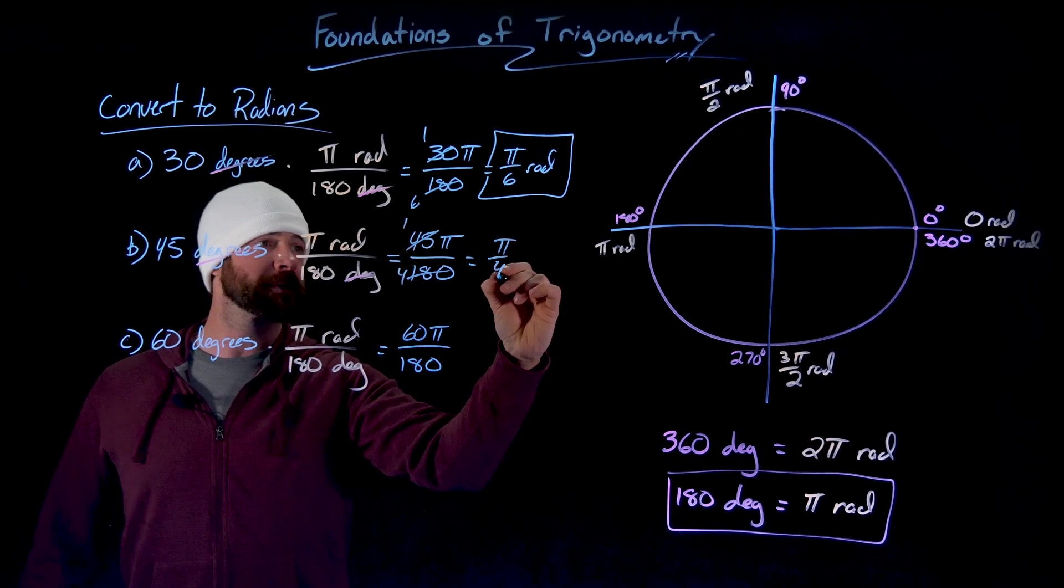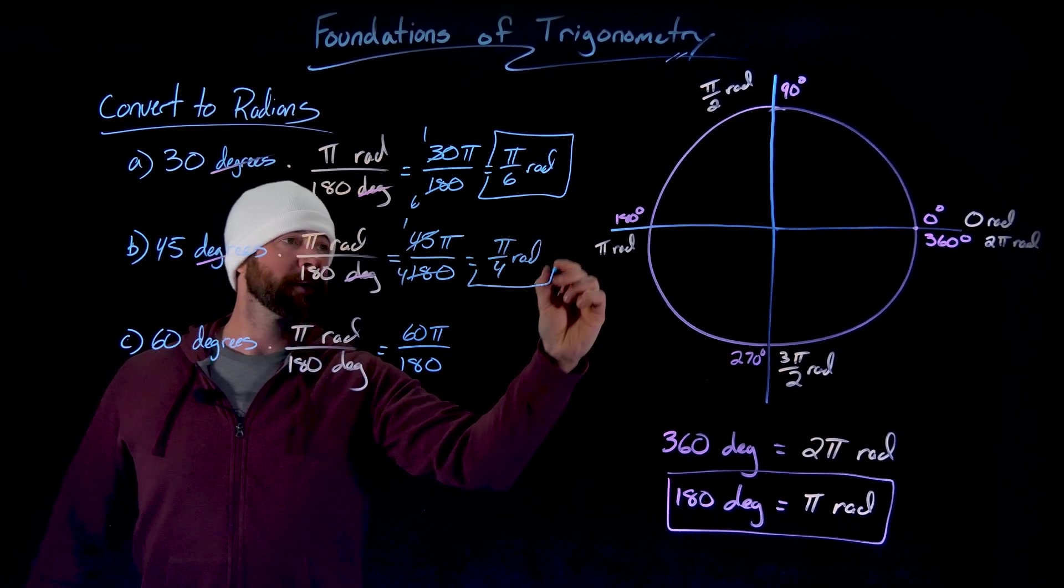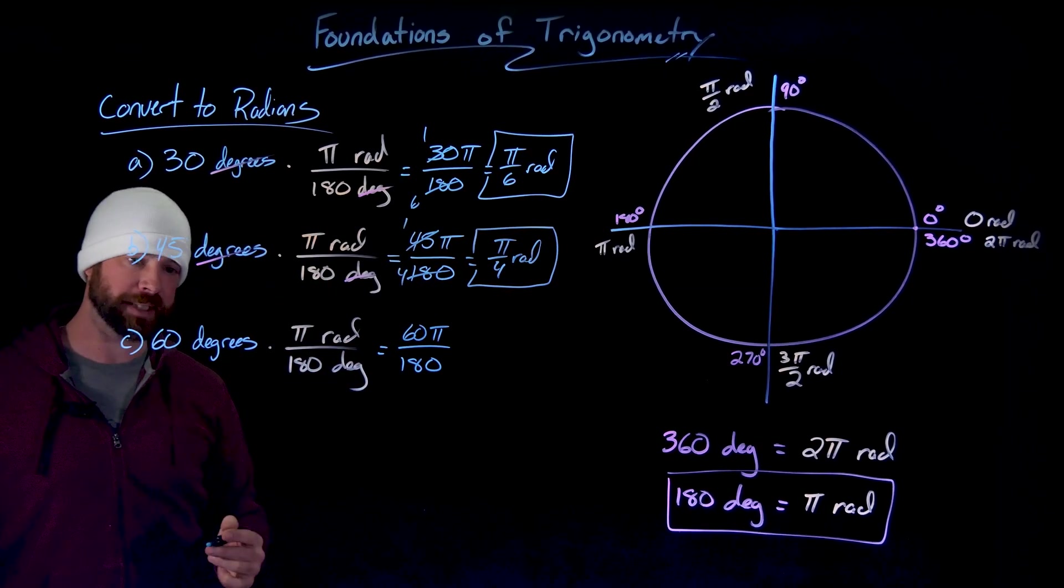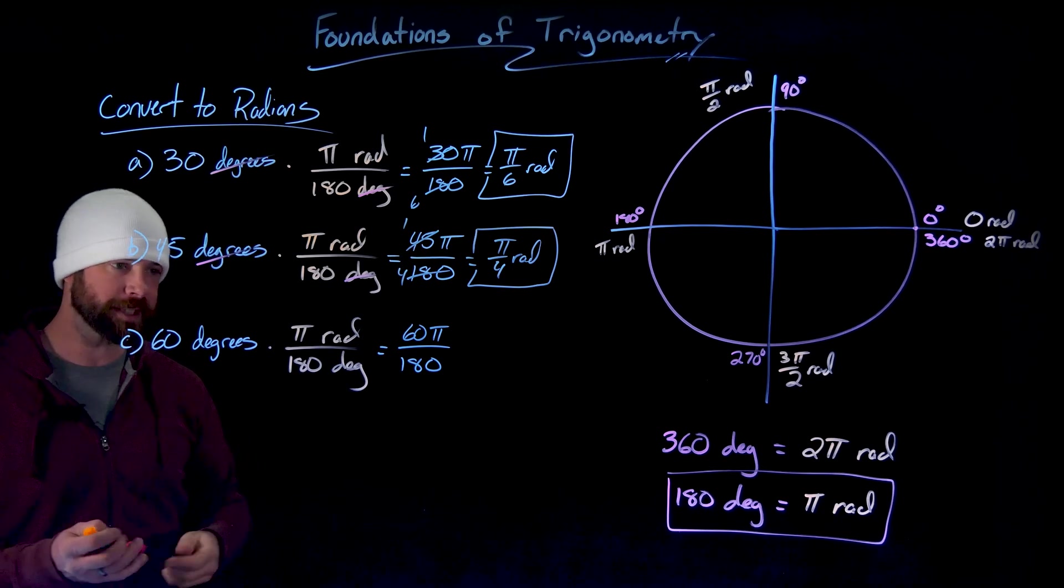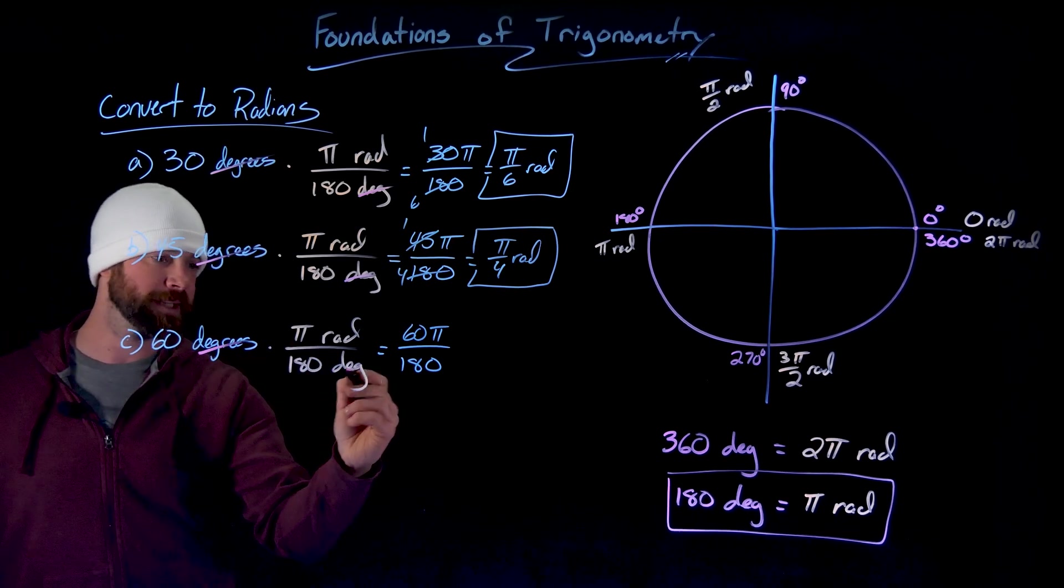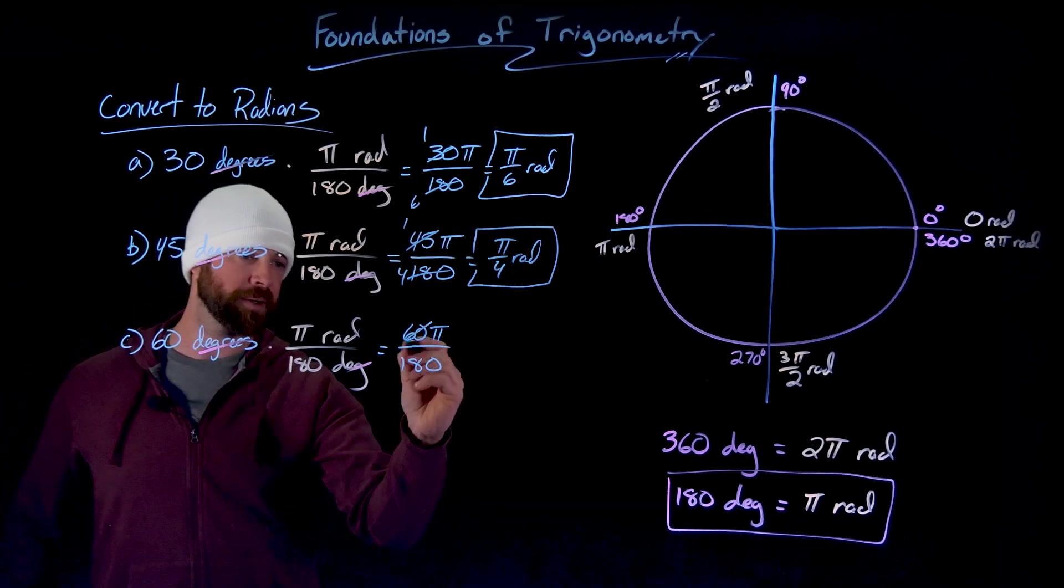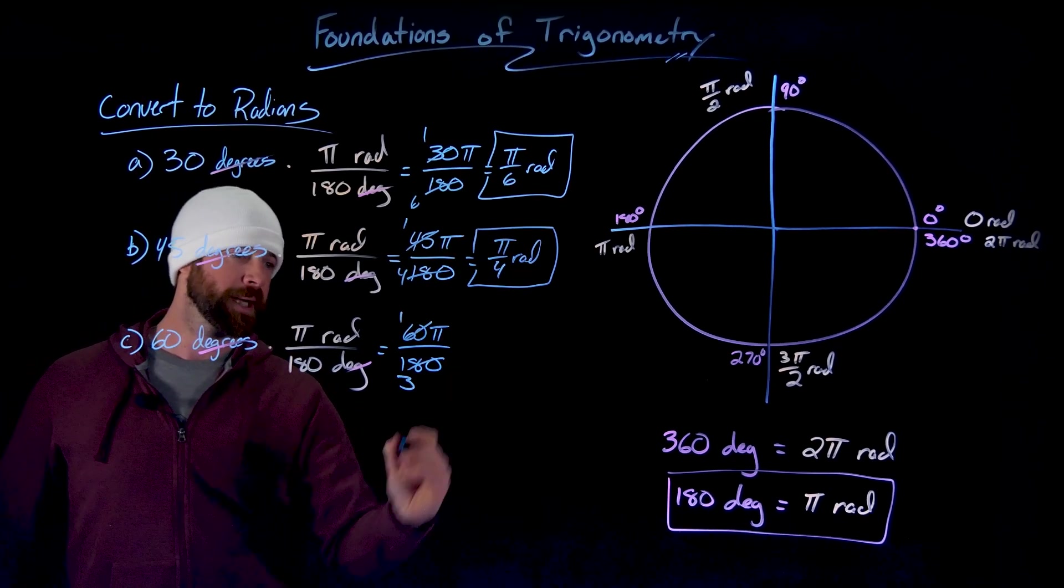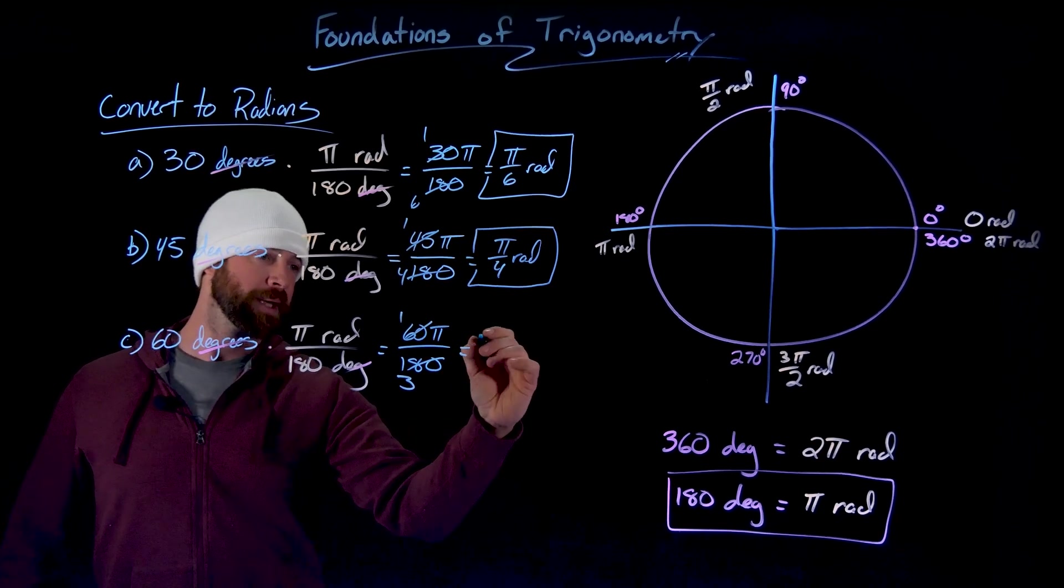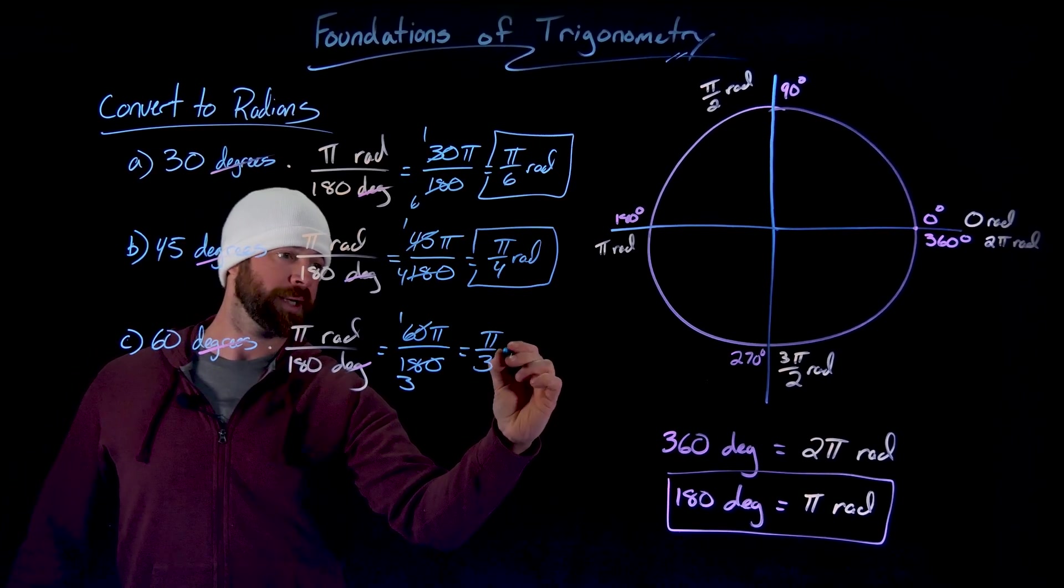So I get pi fourths radians for 45 degrees. And then the same treatment here for 60, very similar to the 30 degrees. The degrees cancel here, I can reduce the 60 and 180, 60 goes into 183 times and giving me that this is pi over three radians.